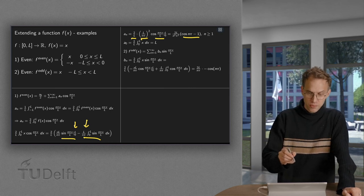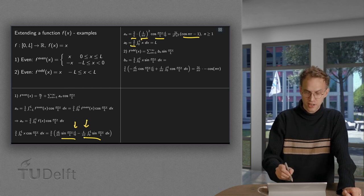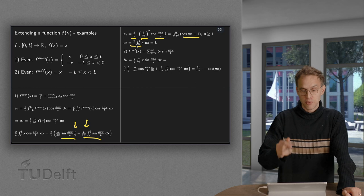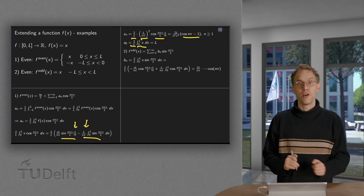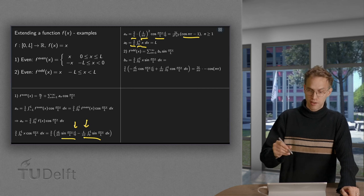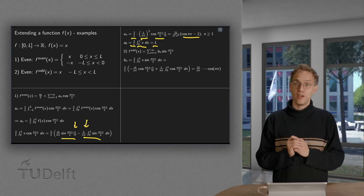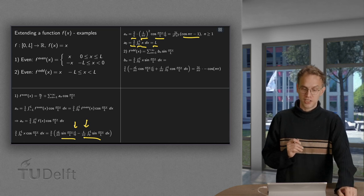And then the a_0. You have the 2 over l, and then you integrate 0 to l, x times 1 dx gives us 1 half x squared, gives us 1 half l squared, times 2 over l gives us l. So there we have the Fourier series of the even extension.